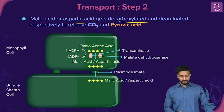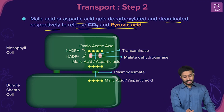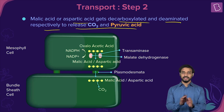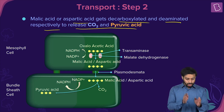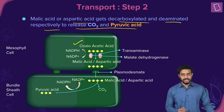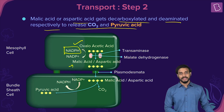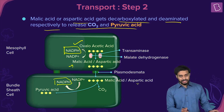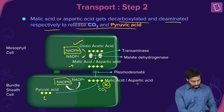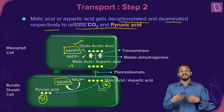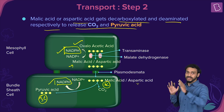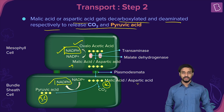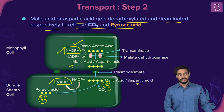In the bundle sheath cells, malic acid is decarboxylated and aspartic acid is deaminated, releasing carbon dioxide and forming pyruvic acid — a change from a four-carbon to a three-carbon compound. Note that NADPH is utilized when OAA is converted to malic acid, and NADPH is produced during decarboxylation, so the net gain or loss of NADPH is zero.